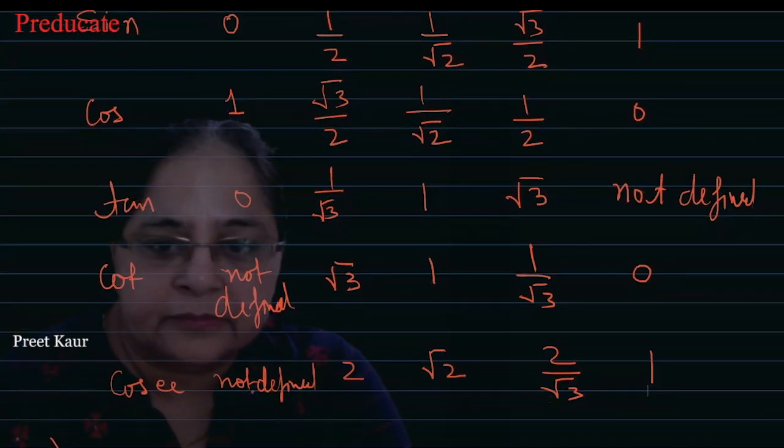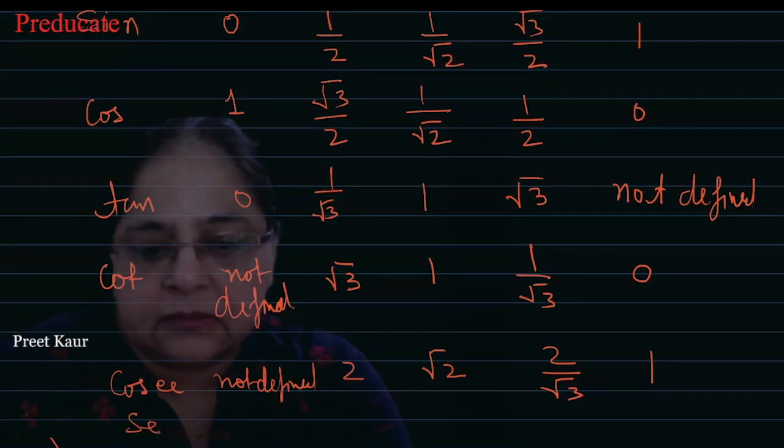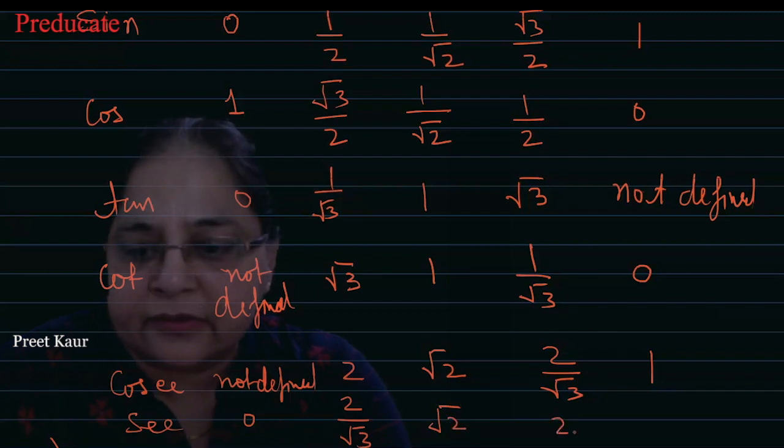Now sec. Sec 0 is 1 upon 1, which is 1. And sec 30 is 2 upon root 3. Sec 45 again is root 2.